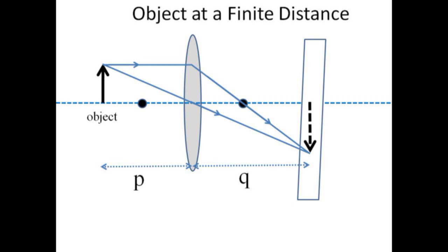Another easy ray to trace passes through the center of the lens undeflected. Where these two rays intersect is where we expect a real inverted image.